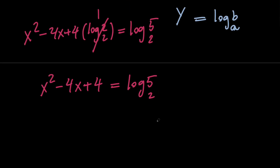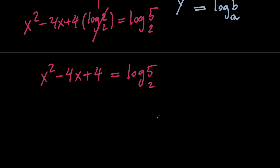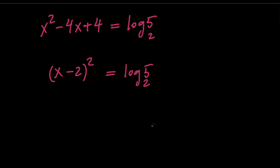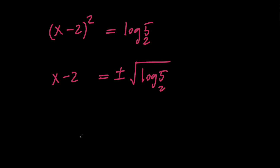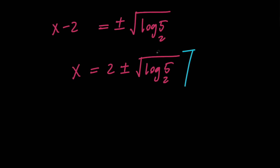Now at this point, one of the things we can do is move everything to the same side to form a quadratic equation and use the quadratic formula. But instead, I'm going to use the fact that the expression on the left-hand side is a perfect square — it equals the quantity x minus 2 squared. Taking the square root of both sides, we get x minus 2 equals positive or negative the square root of log 5 with base 2. Adding 2 to both sides gives x equals 2 plus or minus the square root of log 5 with base 2. These two are the solutions to our equation.